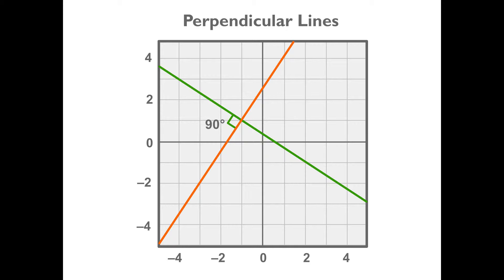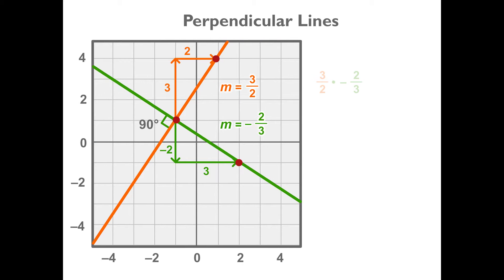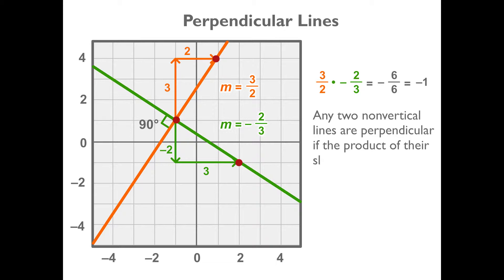Now compare the slopes. The slope of one line is 3 over 2. The slope of the perpendicular line is negative 2 over 3. The product of these two perpendicular slopes is negative 1. Any two non-vertical lines are perpendicular if the product of their slopes is negative 1. These slopes are also called negative reciprocals of each other.